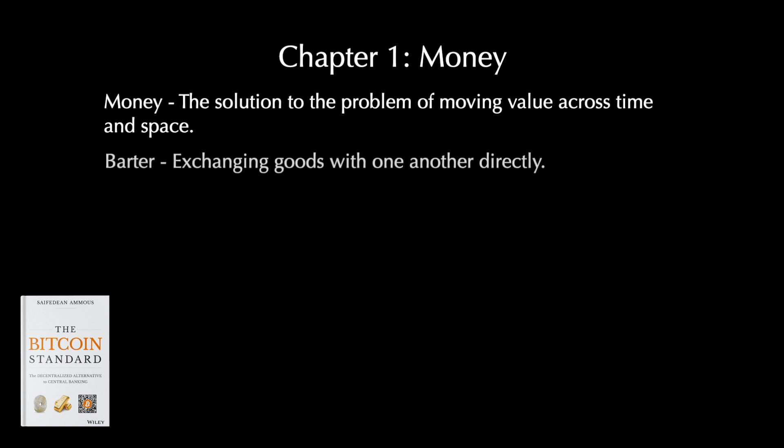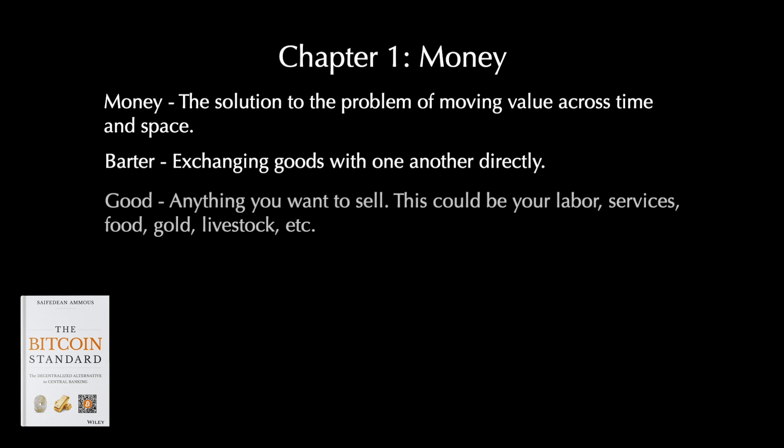The problem with barter is that it only works in small groups, with only a few goods and services produced. For the purposes of this book, a good is anything you want to sell to another person — your labor, services, expertise, food, gold, livestock, etc. Literally anything you want to sell is considered a good, including money. As societies grow, the opportunity for specialization increases, and more goods and services are possible among more and more people. This creates a growing problem called the Coincidence of Wants.